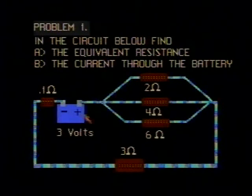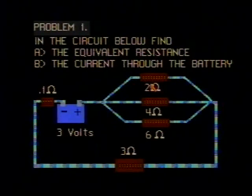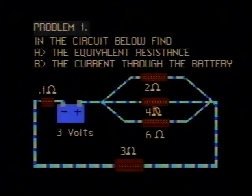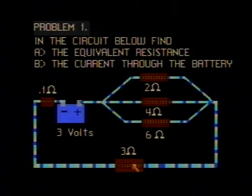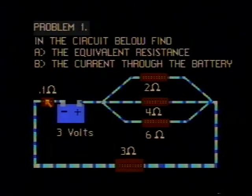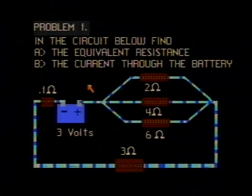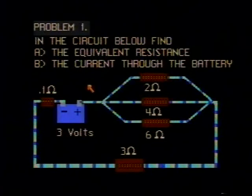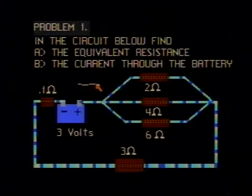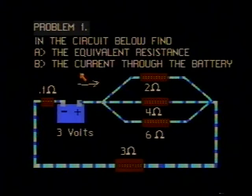The circuit consists of a three-volt battery, three resistors that are connected in parallel, which in turn are connected to two other resistors in series. Find the equivalent resistance of the entire circuit and the current through the battery, let's call the current I.